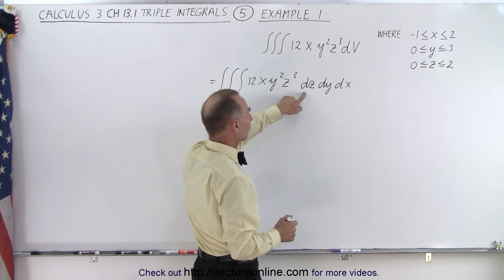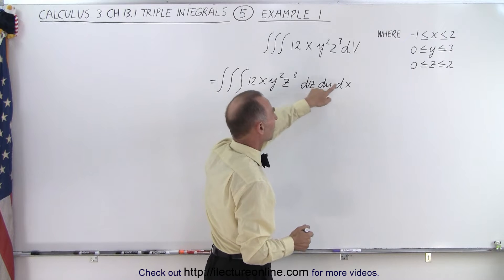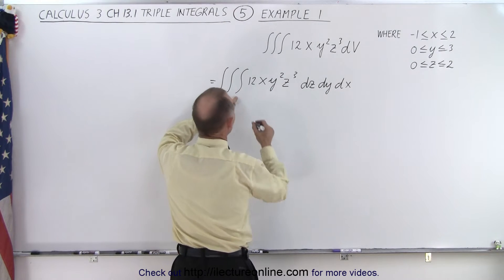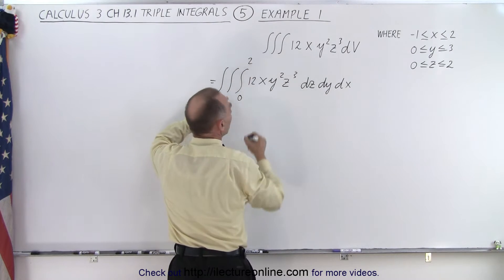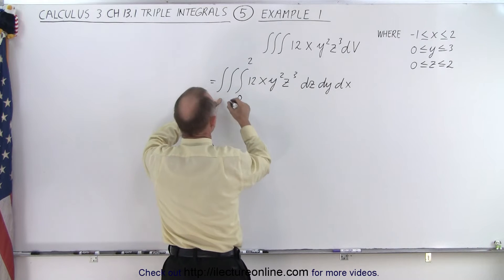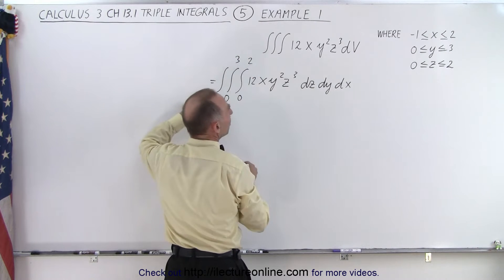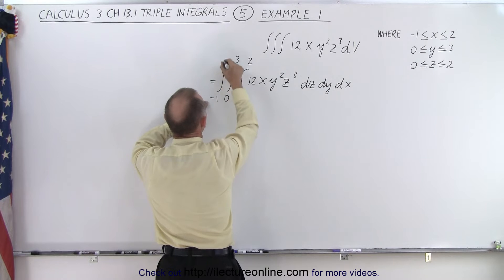So this will become our first integral over z then over y then over x. So first we put in the z limits here from 0 to 2, then we put in the y limits from 0 to 3, and then we put in the x limits from -1 to 2.